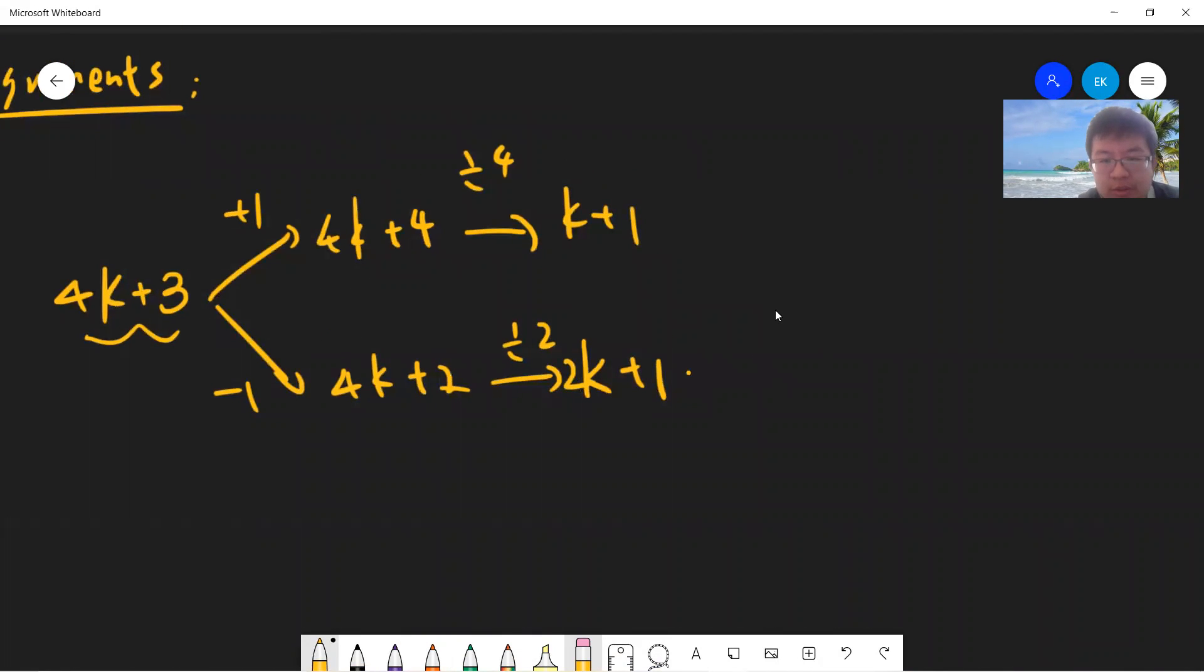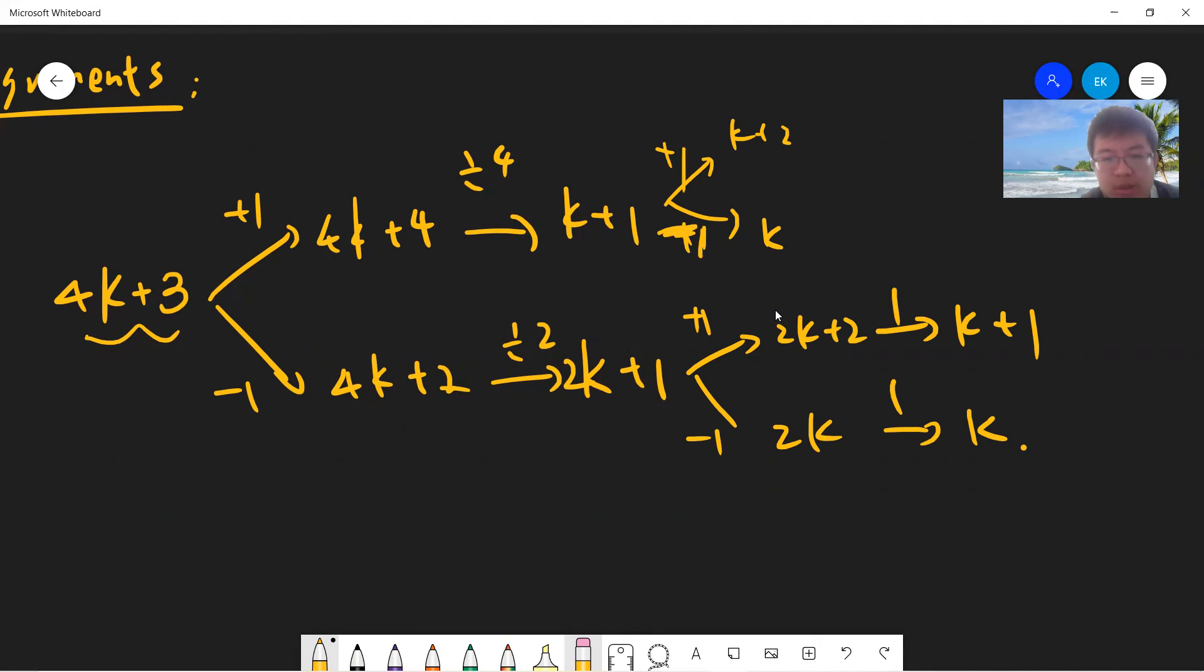So you can add 1, minus 1. So it becomes 2k plus 2, and it takes one step to become k plus 1. And for this one, it's 2k, it takes one step to become k. Also for this one, you can go to k plus 2, k plus k, minus 1, add 1.